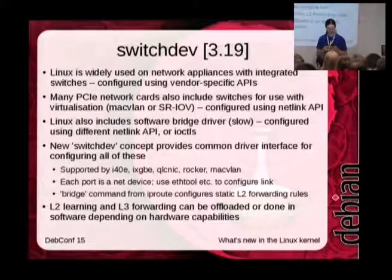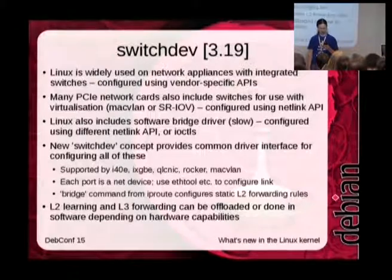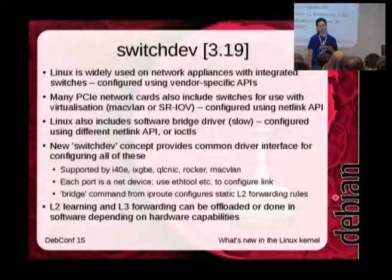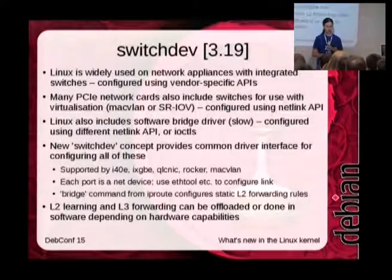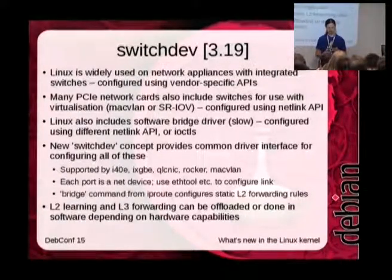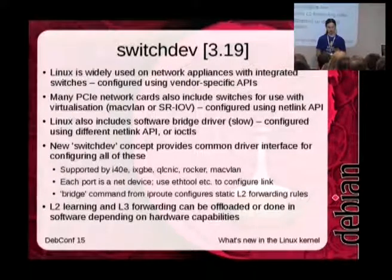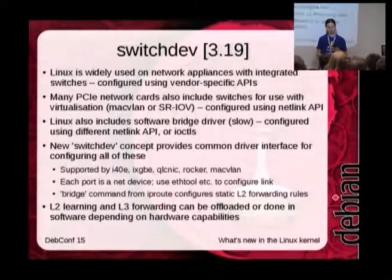Currently it's not supported by all the drivers you'd want. Intel 10 and 40 Gigabit Ethernet cards support it, Qlogic supports it, and there's a thing called Rocker — a switch emulated in QEMU — which is useful as a test bed for this new API. Also the MAC VLAN software bridge. Every port on a switch now gets its own net device, and you can use ethtool to configure speed and auto-negotiation, and the bridge command will now work with hardware bridges as well as software.